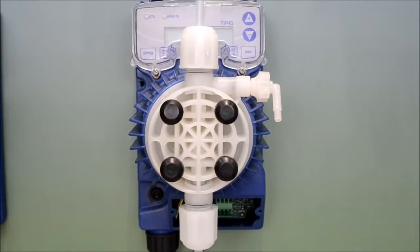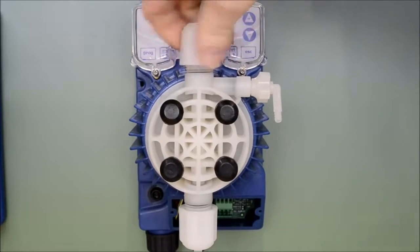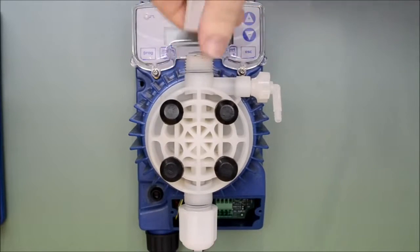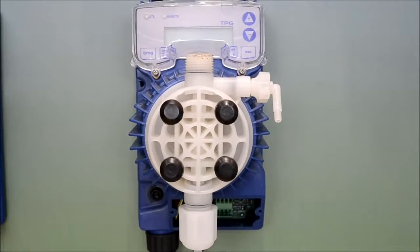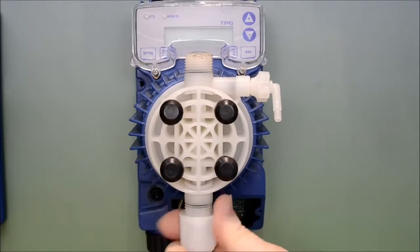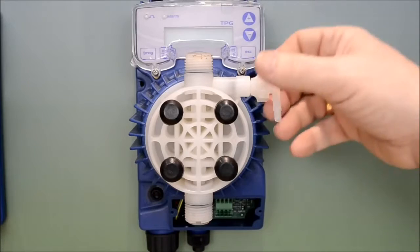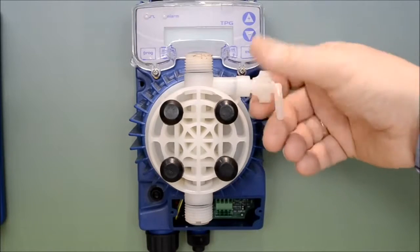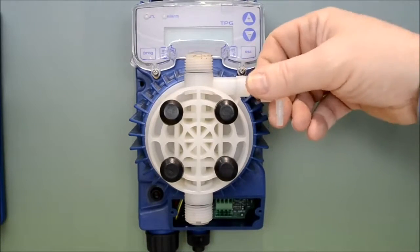To access these, first remove the tube connections and then release the bleed valve. This will allow air or excess liquid to be removed from the pump head.